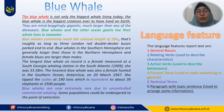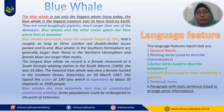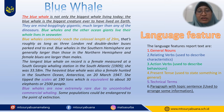Let's continue with the green one. The green indicates action verbs. Action verbs are used to describe behaviors. And the brown one indicates present tense — report text uses present tense, which indicates something in general. The next one is technical terms. A report text usually contains many technical terms — these are terms that are unique to the thing being described.